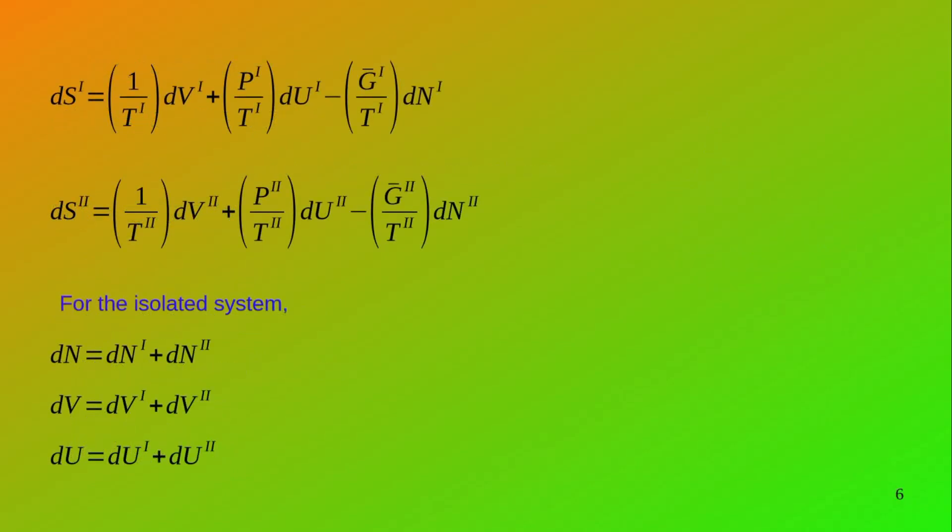Therefore we can write that the change in entropy of subsystem 1 is: dS₁ = (1/T₁)dU₁ + (P₁/T₁)dV₁ − (G̅₁/T₁)dn₁, where T₁ is the temperature, P₁ is the pressure, and G̅₁ is the Gibbs free energy per unit mole of subsystem 1. A similar equation can be written for subsystem 2.